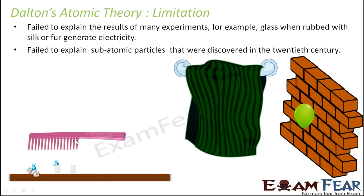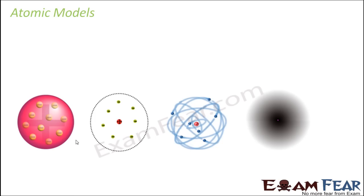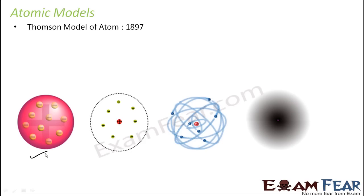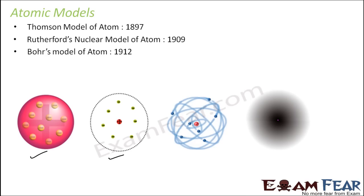Dalton could not explain the sub-particles that were discovered later in the 20th century, because as per Dalton's theory, the atom is indivisible. So various atomic models were proposed. Thomson gave a model in 1897, then Rutherford gave a model in 1909, then Bohr gave a model in 1902, and then the quantum model. We will not study the quantum model — we will study these three models.